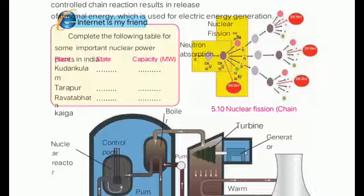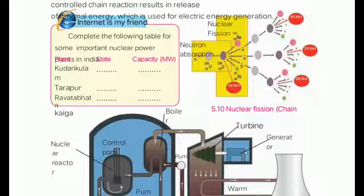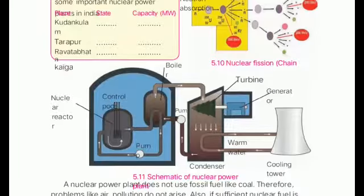Now, there is one chart for you to complete. In this chart, they have given a table listing nuclear plants in India. You have to mention their state and capacity in milliequivalent volts. The nuclear energy generation plants in India are located at Kudankulam, Tarapur, Rawat Bhata, and Kaiga.